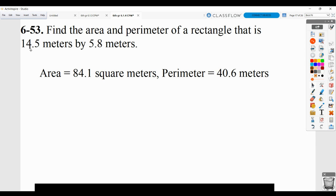And for perimeter, you should show that you added, you know, 14 and 5 tenths, and 5 and 8 tenths, plus 14 and 5 tenths again, plus 5 and 8 tenths again. In other words, two of the lengths plus two of the widths, equaling the total of 40 and 6 tenths meters.